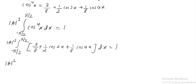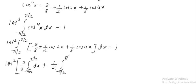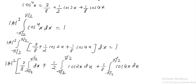From the property of integral, we can write: (3 by 8) times the integral from minus pi by 2 to plus pi by 2 of dx, plus (1 by 2) times the integral from minus pi by 2 to plus pi by 2 of cos 2x dx, plus the remaining terms, all equal to 1.